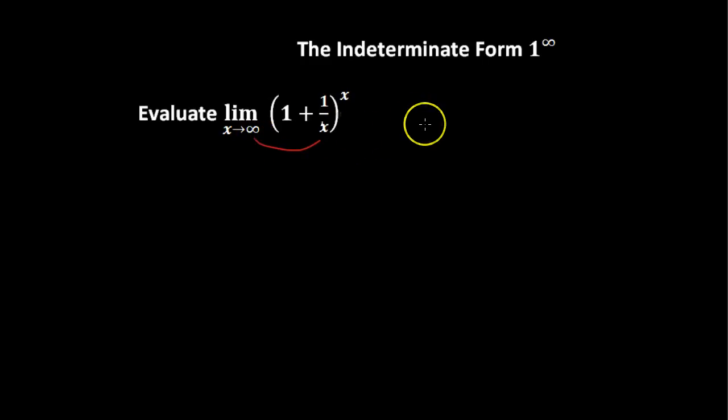Well, we would get 1 plus 1 over infinity, or that is 1 plus 0, all raised to the infinity power. So 1 to the infinity power, an indeterminate form.